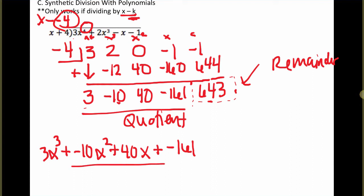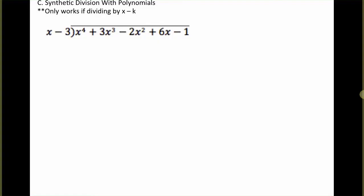So this is the quotient, that's the remainder, 643. If we wanted to write it all together, we could write our final answer as this. Let's look at one more example of synthetic division, because it will help us save some time as we're doing this division when we're factoring.